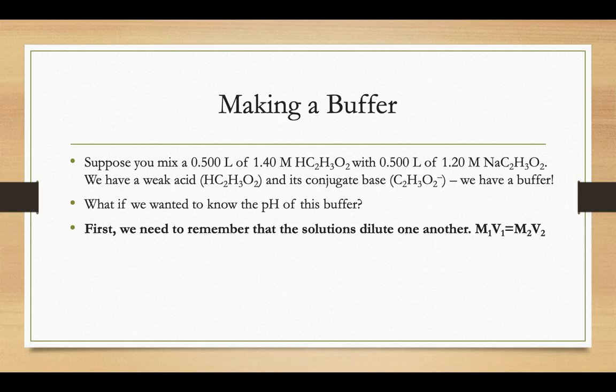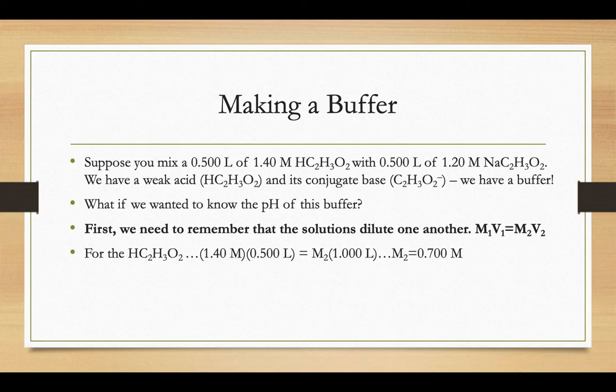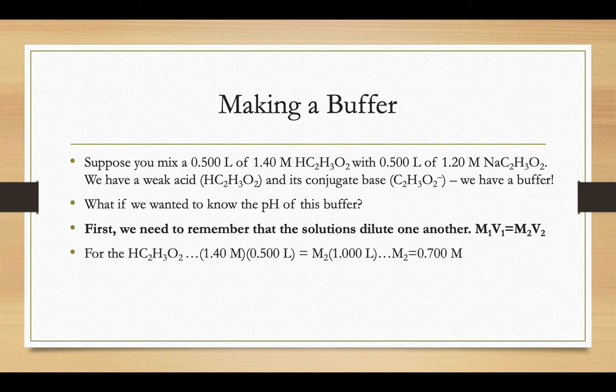The first thing you need to remember whenever you're mixing chemicals together is that the molarities of those chemicals are going to change as you mix them. The solutions dilute one another. So that acetic acid starts with a molarity of 1.4, starts with a volume of 0.5. After we mix it with that half liter of the sodium acetate, its new volume is now 1 liter. So the molarity gets cut in half because we're doubling the volume. So molarity of that acetic acid is now 0.7.